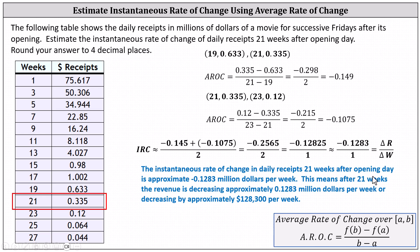This means after 21 weeks, the revenue is decreasing approximately 0.1283 million dollars per week, or decreasing by approximately $128,300 per week. I hope you found this helpful.